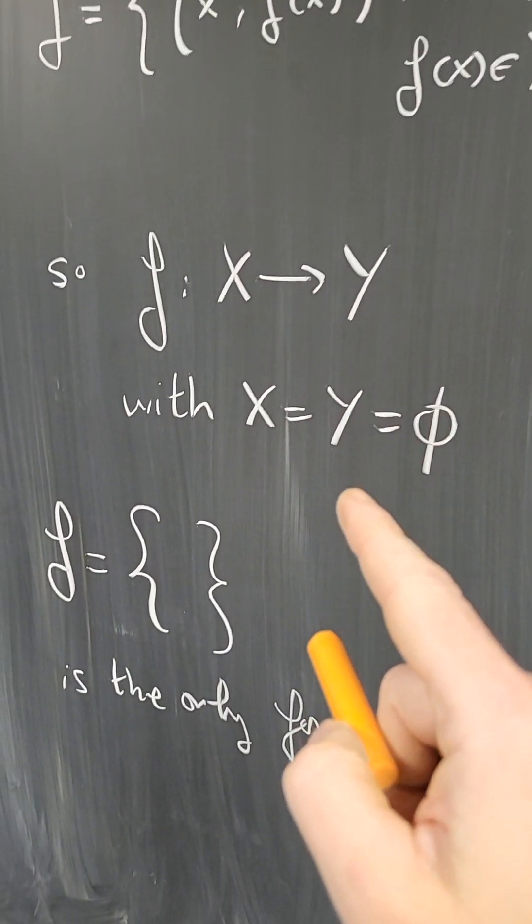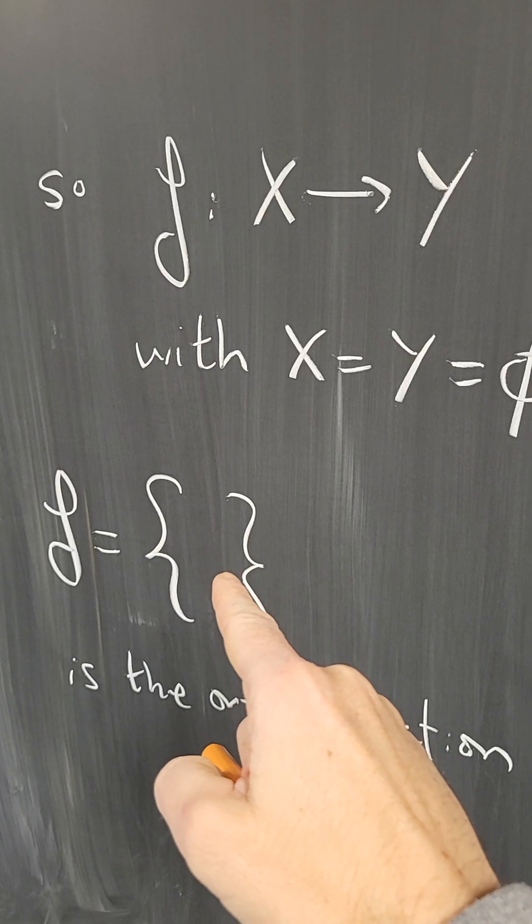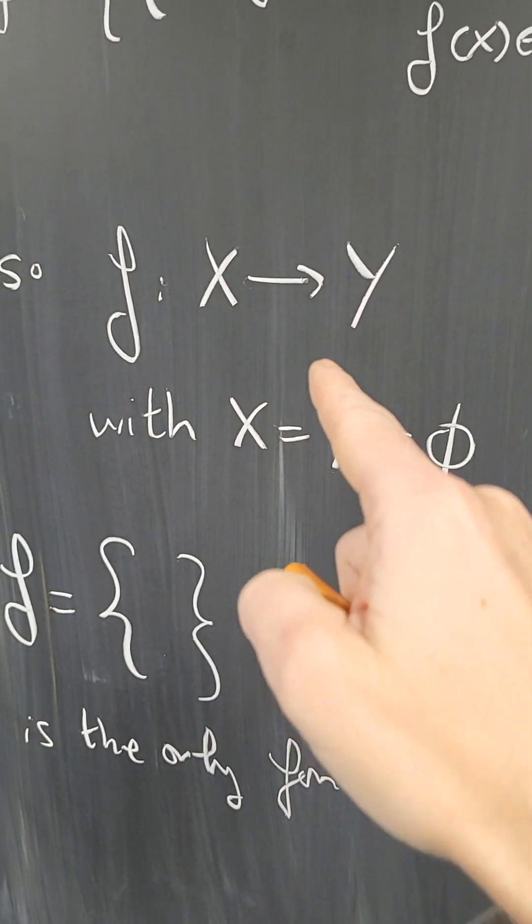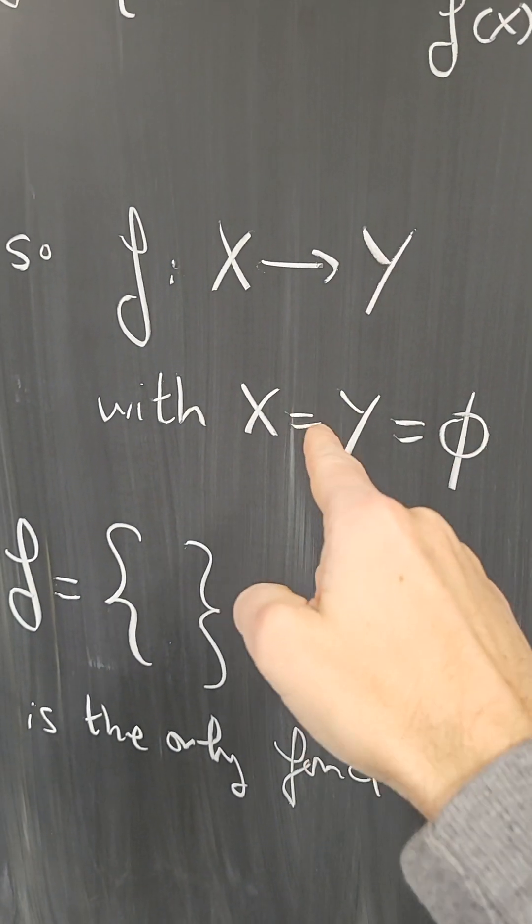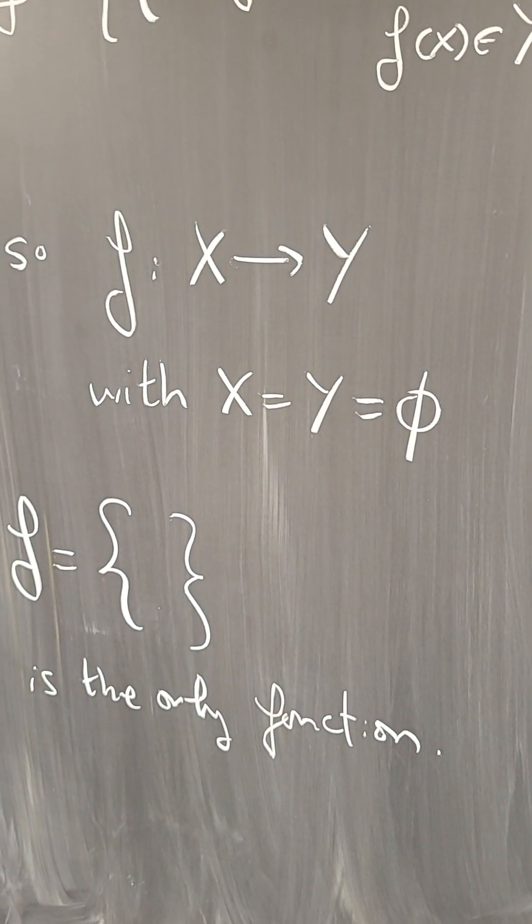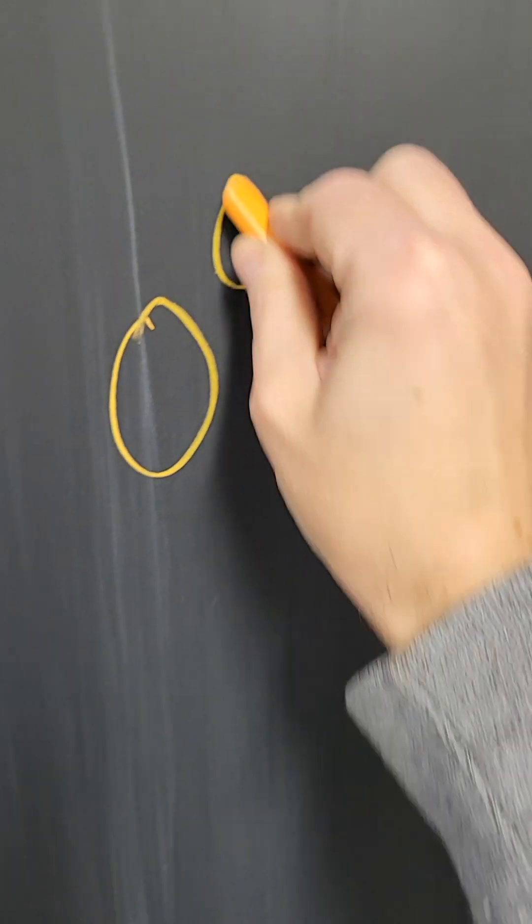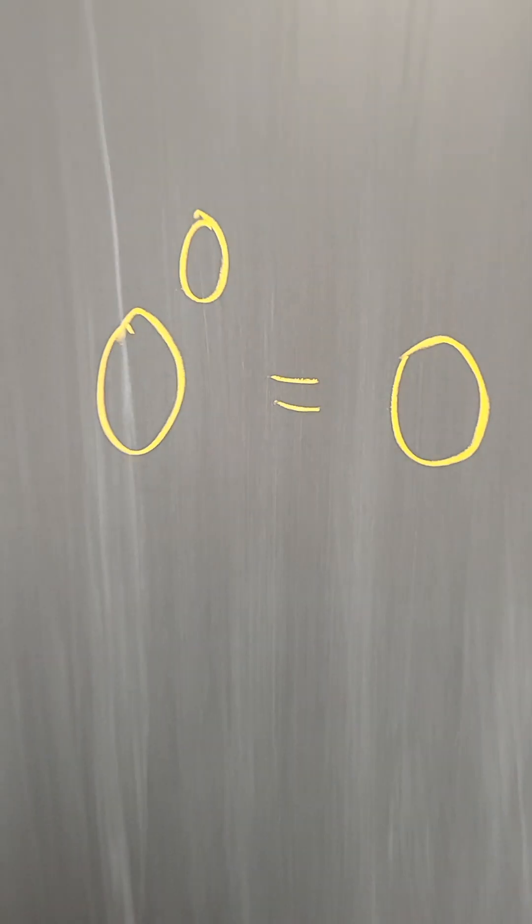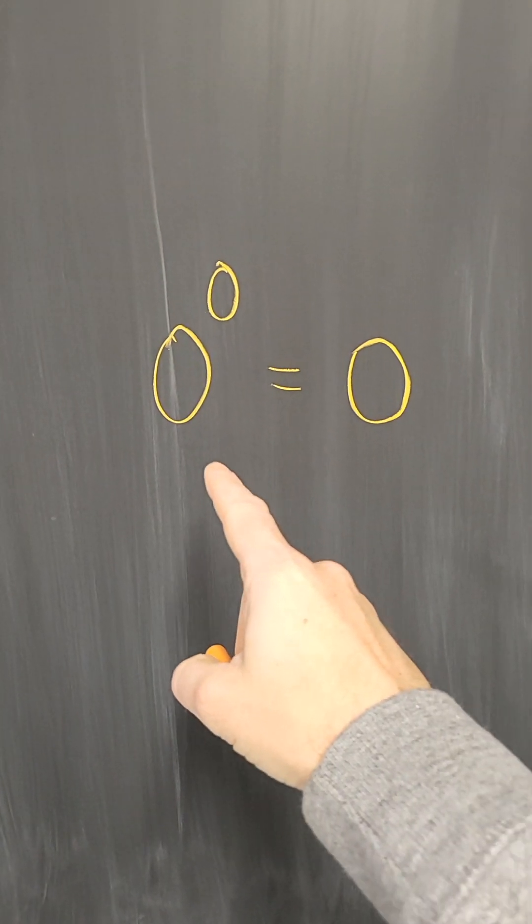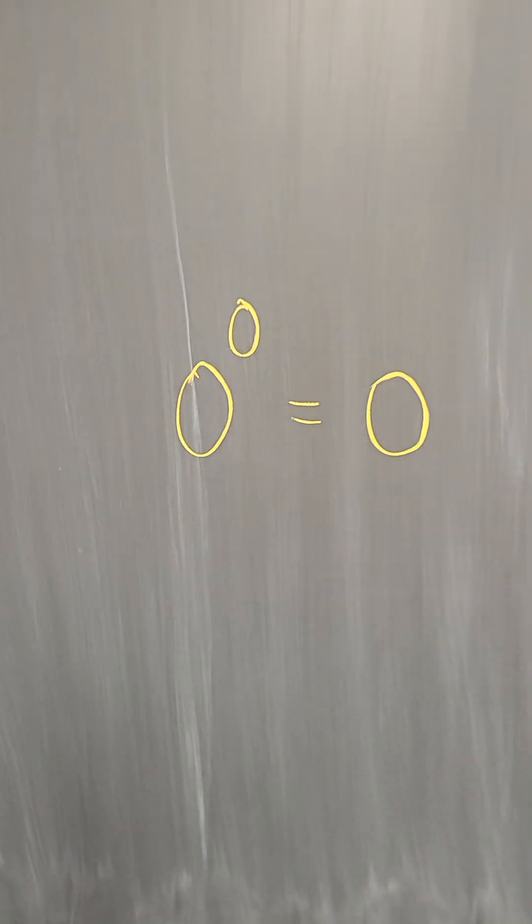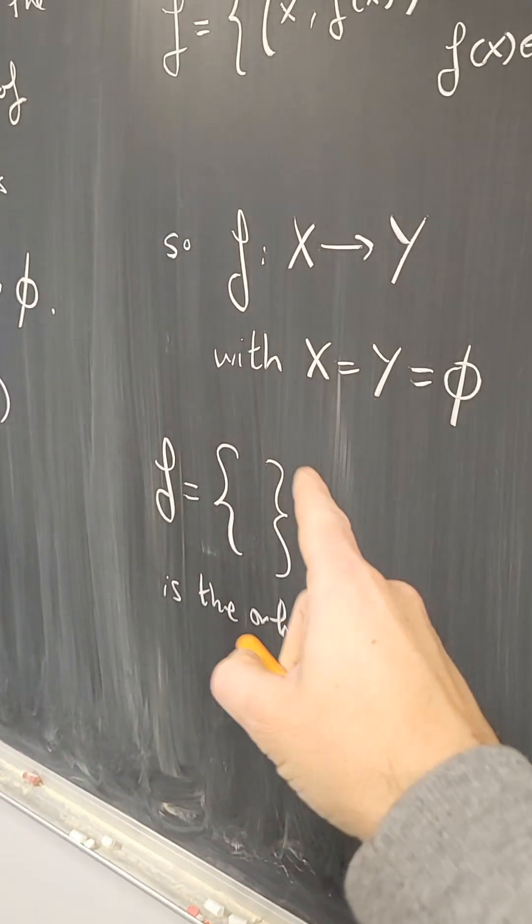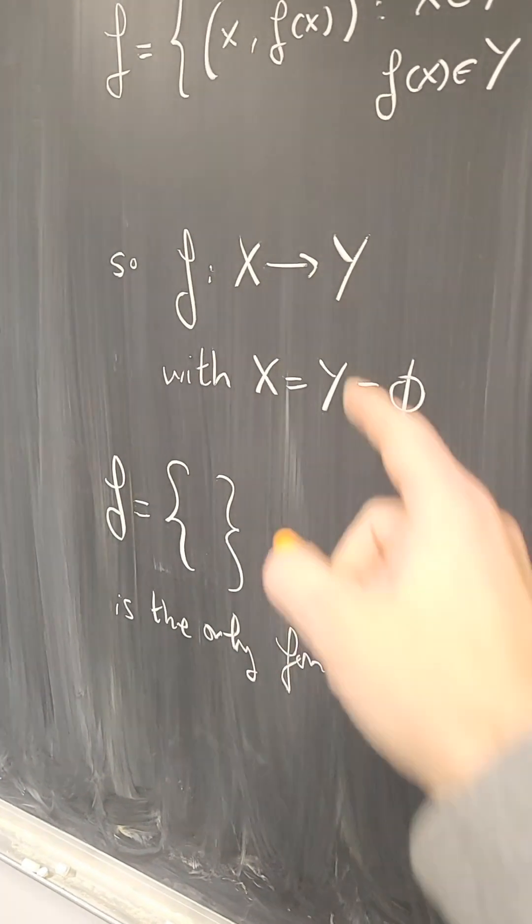That would say that this is not a function. And it would say that, in fact, there are zero functions from the empty set to the empty set, which would agree with the idea that zero to the zero is zero, just like zero to any other number is zero. There would be no functions from the empty set to anything.